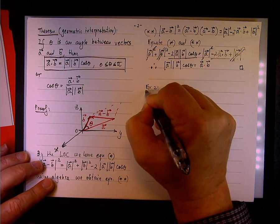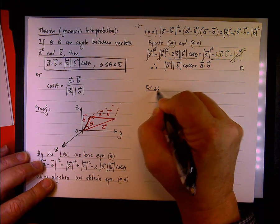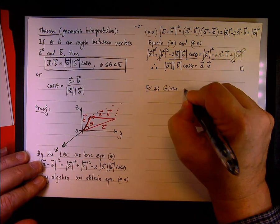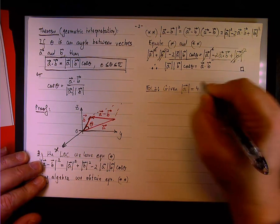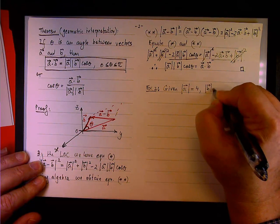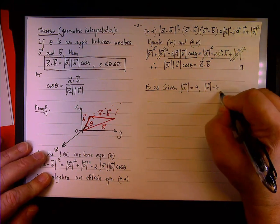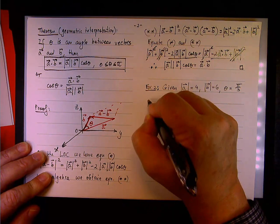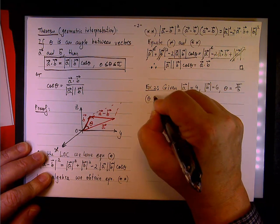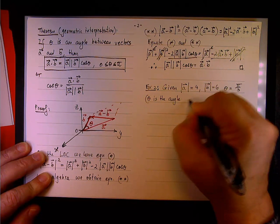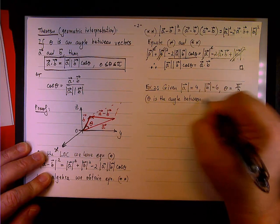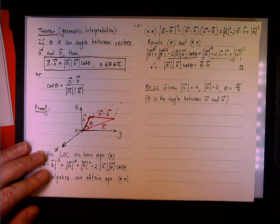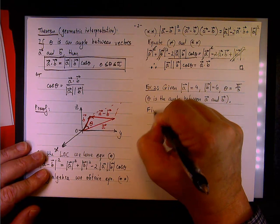So we are good. For example two, based on this theorem, the angle. Let's see, we are given that the magnitude of vector A is 4, the magnitude of vector B is 6, okay? And also theta, of course theta is the angle between the two vectors.